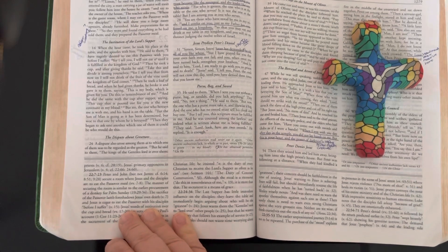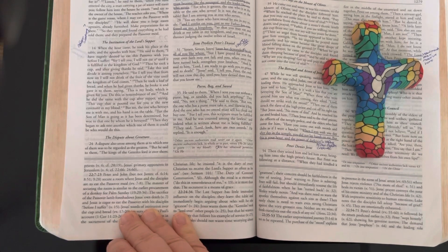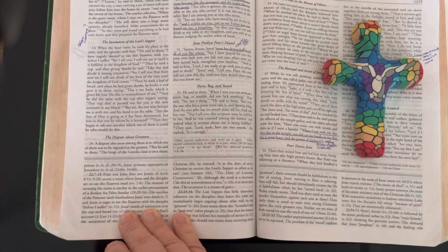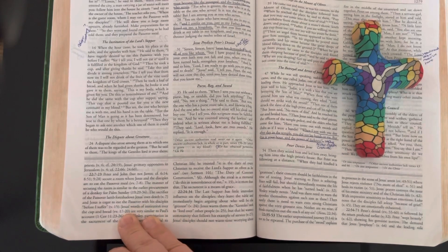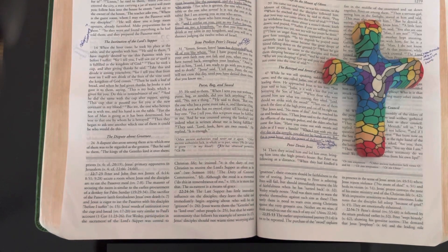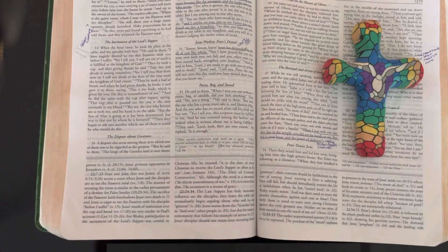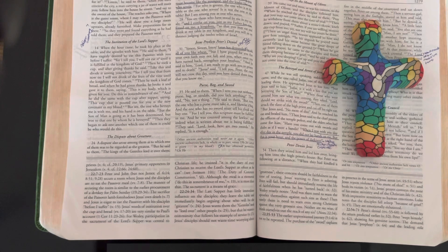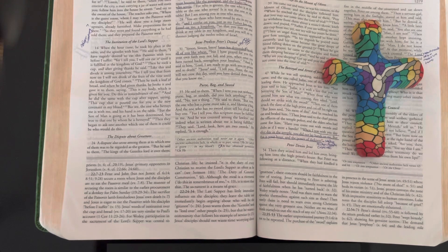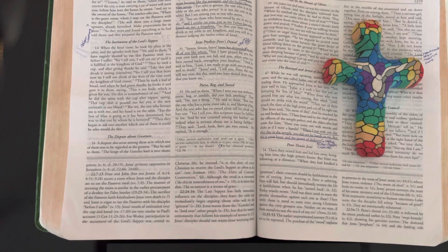"For who is greatest, the one who is at the table or the one who serves? Is it not the one at the table? But I am among you as one who serves. You are those who have stood by me in my trials, and I confer onto you, just as my Father has conferred onto me a kingdom, so that you may eat and drink at my table in my kingdom. And you will sit on thrones judging the twelve tribes of Israel."